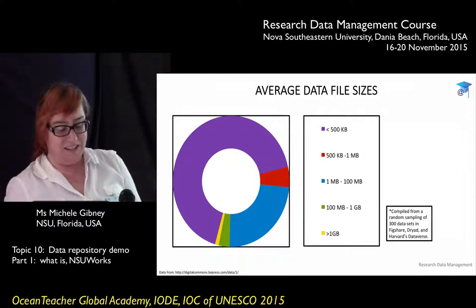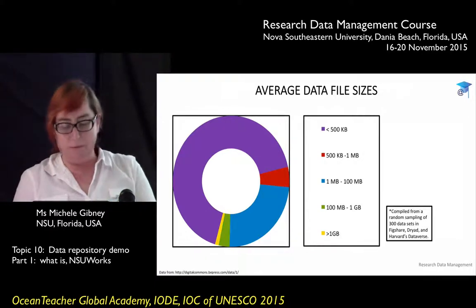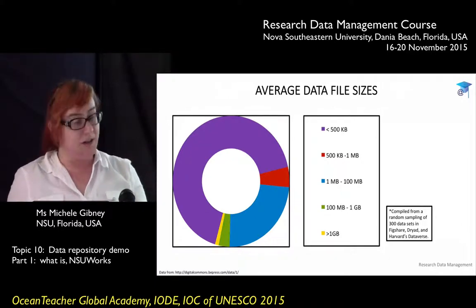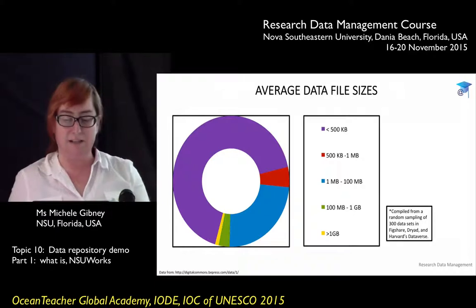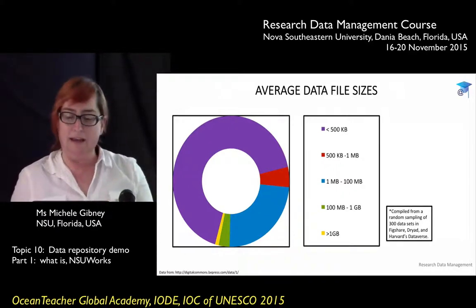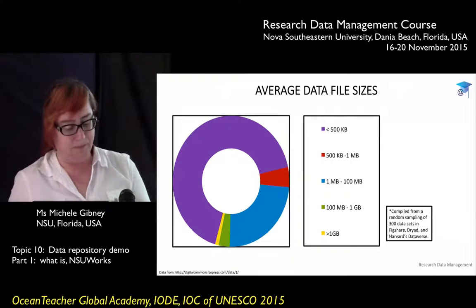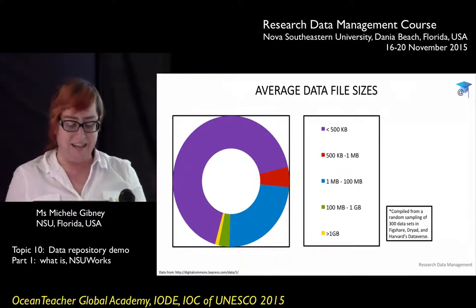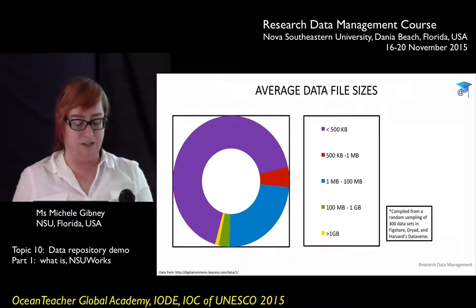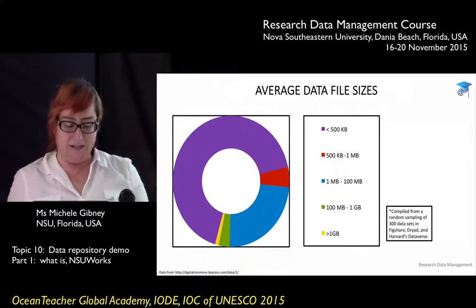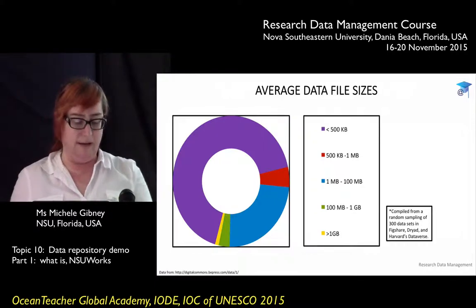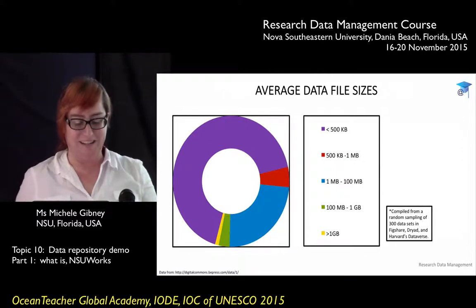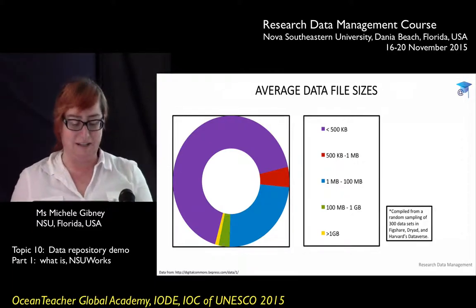Research conducted in 2013 pulled from a random sampling of data sets from Figshare, Dryad, and Harvard's Dataverse, and found that the majority of individual files in a data set are less than 500 kilobytes, with only 1% of files over one gigabyte. Wiley did a study about nine months ago scanning data project sizes — the whole project, not just one file — and found that 16% of projects were less than 10 gigabytes and only 3.5% were more than three terabytes. This represents the range of sizes a data set project can entail.